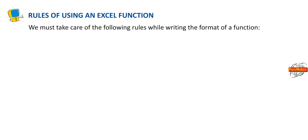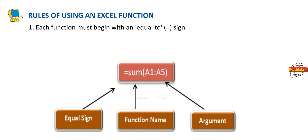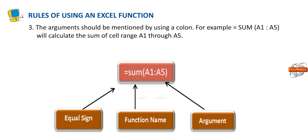Rules of using an Excel function: Each function must begin with an equal to sign. The arguments of functions must be enclosed within brackets. The arguments should be mentioned by using a colon. For example, =SUM(A1:A5) will calculate the sum of the cell range A1 through A5.